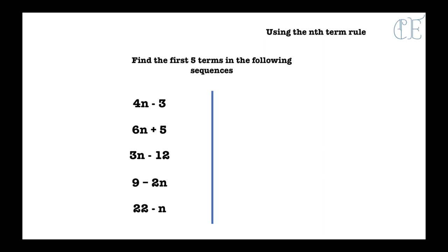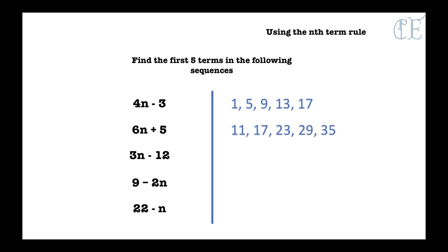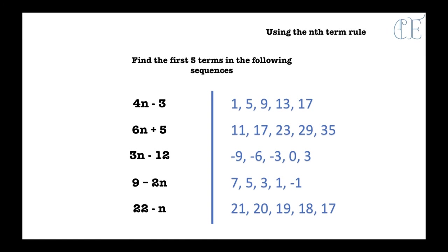So for 4n − 3, you must create 5 equations with n equal to 1, 2, 3, 4 and 5. You should have had 1, 5, 9, 13 and 17. For 6n + 5: 11, 17, 23, 29 and 35. For 3n − 12: minus 9, minus 6, minus 3, 0 and 3. If you struggled on that one, I suggest you go back and watch the video on multiplying and dividing negative numbers. For 9 − 2n: 7, 5, 3, 1 and minus 1. And finally, 22 − n gives us 21, 20, 19, 18 and 17.